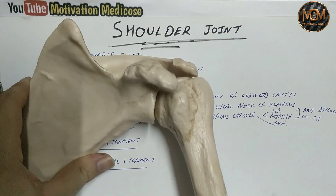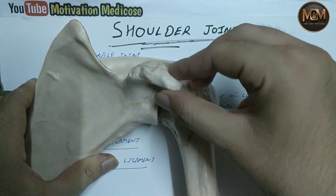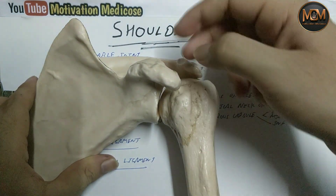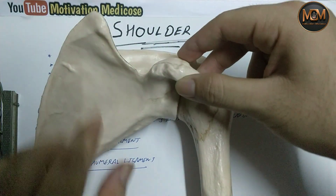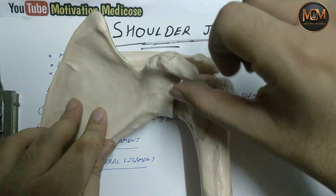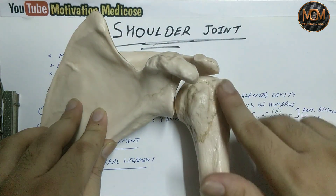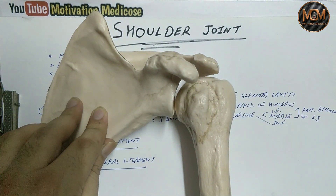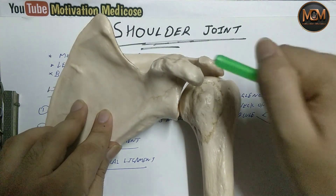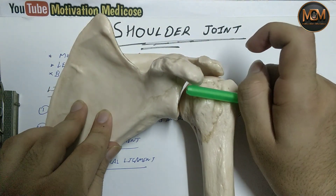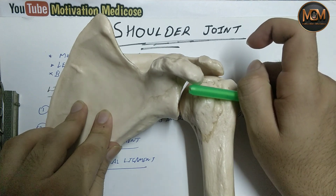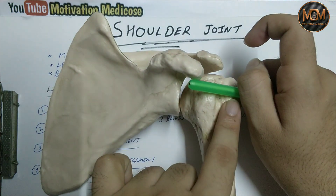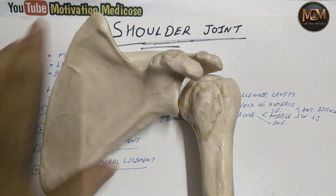The third ligament is the coracohumeral ligament. As the name suggests, this ligament is present between the base of the coracoid process of the scapula and the greater tubercle of the humerus. Imagine this pen — the ligament runs like this between those two points.